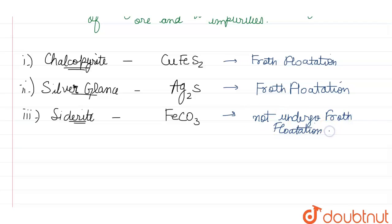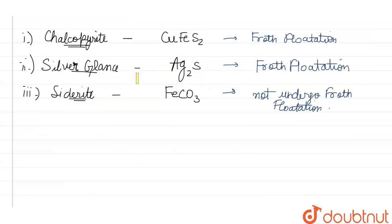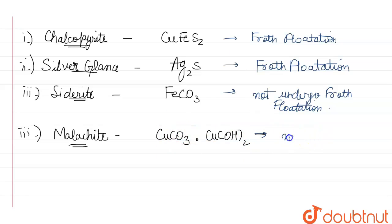The next one is malachite. The chemical formula of malachite is CuCO₃·Cu(OH)₂ — it is basically basic copper carbonate. So it is also a carbonate ore and will not undergo froth flotation.